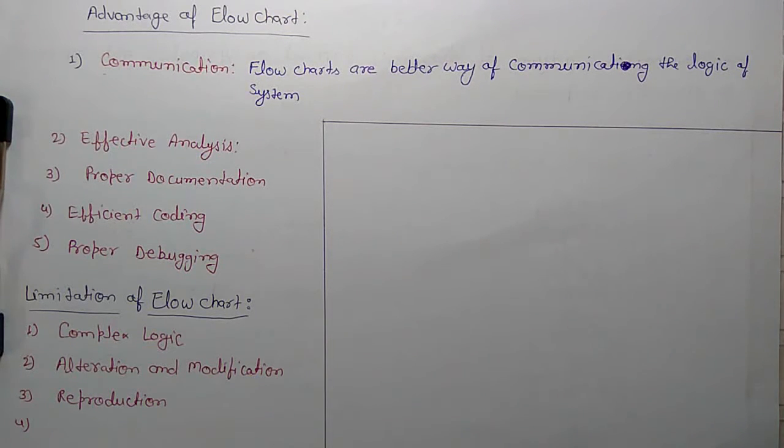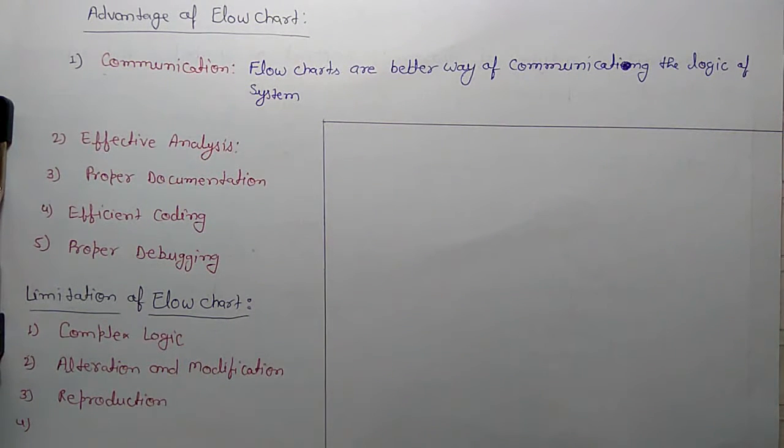Efficient coding. This flowchart creates blueprint of any system. For example, you have to design a software. If you draw the flowchart, it means you have created a replication of coding or algorithm. That is a blueprint of system. Next is proper debugging. The flowchart helps in debugging process. You can find where the error exists.